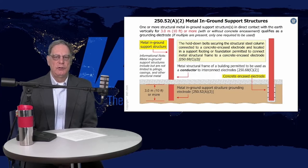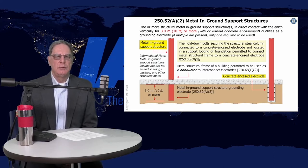Metal in-ground support structure. This is one that's changed over time. It used to say we had a grounded metal structure that was effectively grounded, but what does effectively grounded mean? It's changed names a couple of times. Now it's metal in-ground support structure.